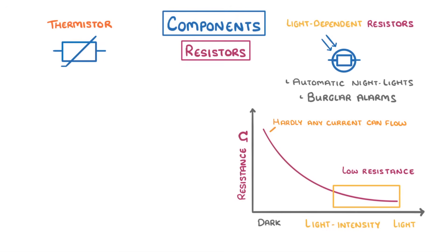For example, if somebody switches on a light or uses a torch, then the light will be detected by the LDR causing the resistance to drop and allowing more current to flow which could then power the alarm.